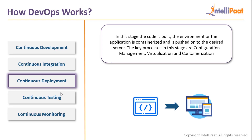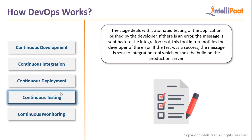Continuous deployment basically means you deploy your code onto a particular server — it could be a testing server or a production server. Deployment involves putting the right kind of software on it and then pushing the build onto your server so that it has the right software environment where it will function. Installing software and configuring the system is also automated using a tool in the continuous deployment lifecycle.